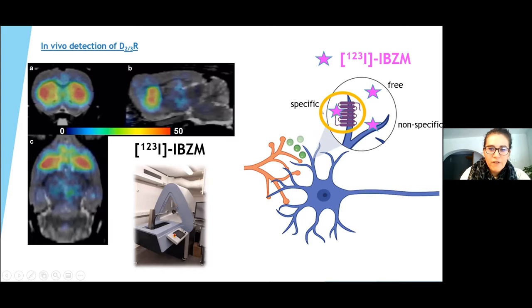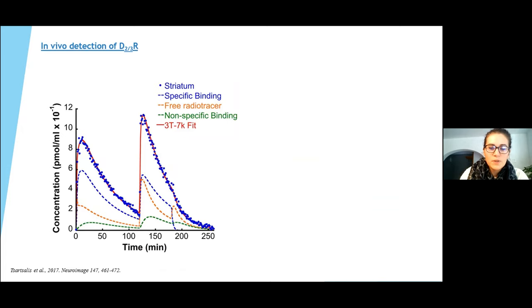Thus, to determine which fraction of the signal corresponds to the specific binding and therefore to a density index of the dopaminergic receptors, we use different signal analysis methods. A multi-injection method makes it possible to determine the real quantity of receptors, the free quantity of receptors in orange, or the non-specific binding in green.